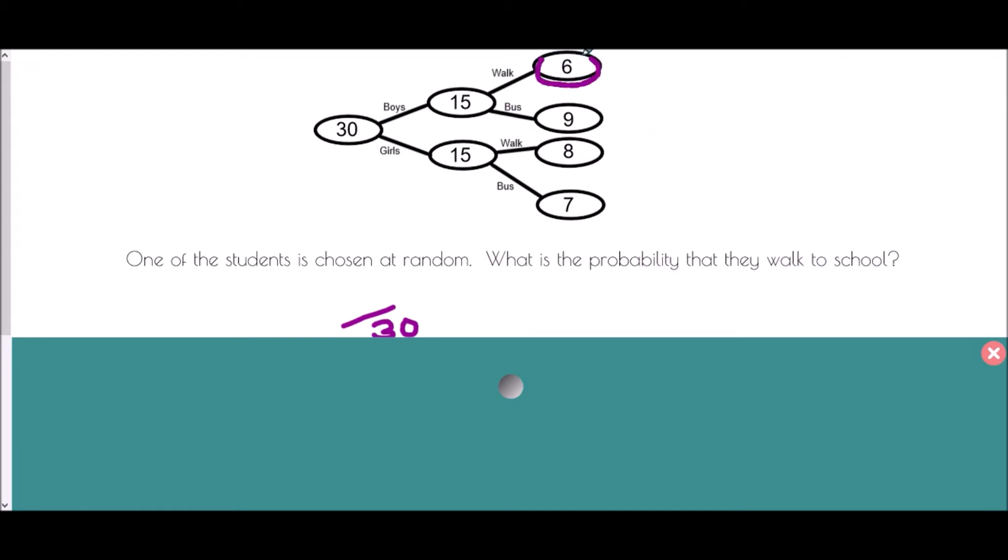Well, we've got six students who are male, eight who are female. And so bring those back together. And we have 14 students. So there are 14 students who walk out of 30 in total. That would be absolutely fine. If we wanted to, we could simplify that. We'll half both numbers. Let's call it seven out of 15.